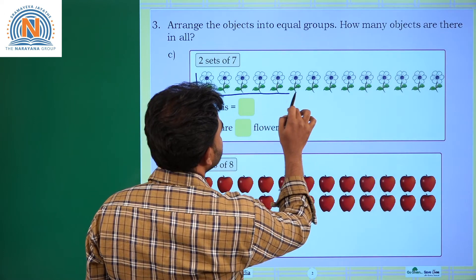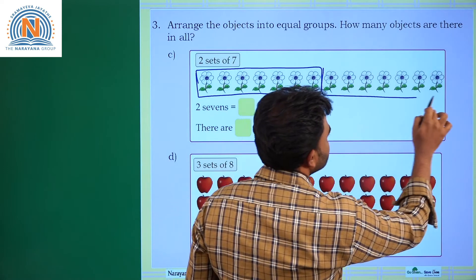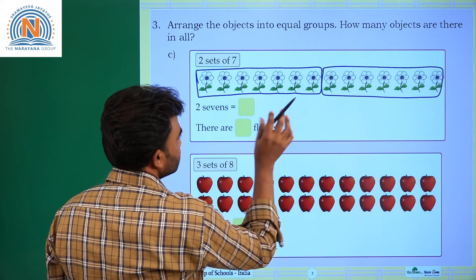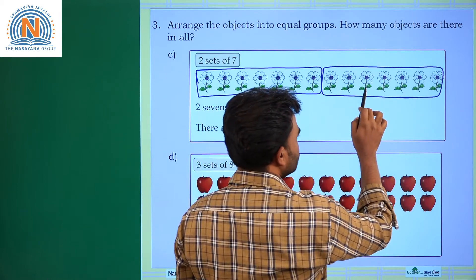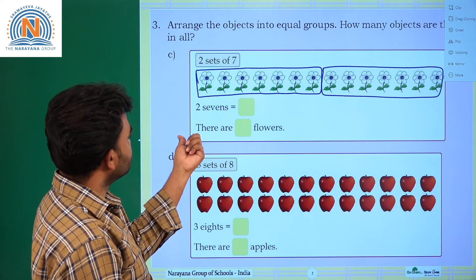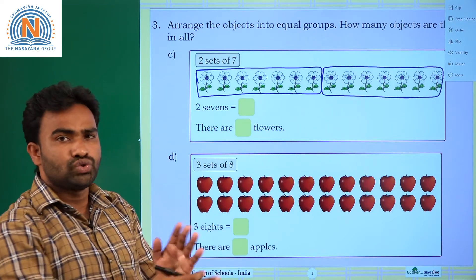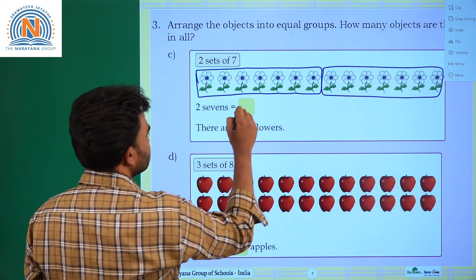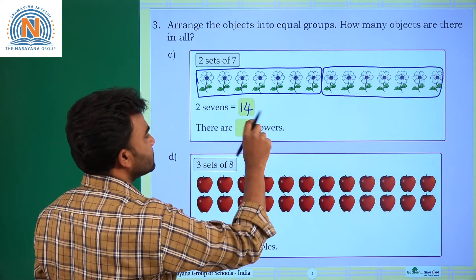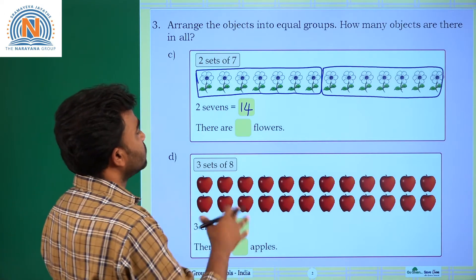In the first set: one, two, three, four, five, six, seven — seven flowers. In the second set: one, two, three, four, five, six, seven — seven flowers. So two sevens: seven plus seven equals two times seven equals fourteen. There are fourteen flowers in two sets.